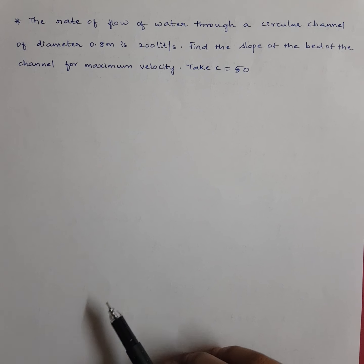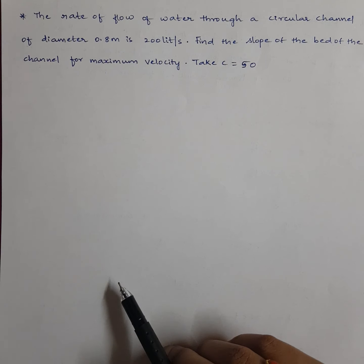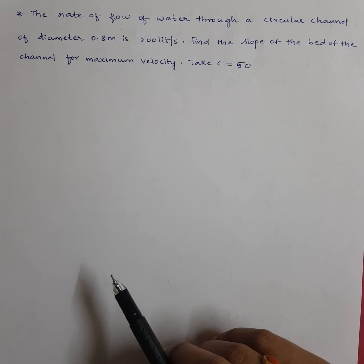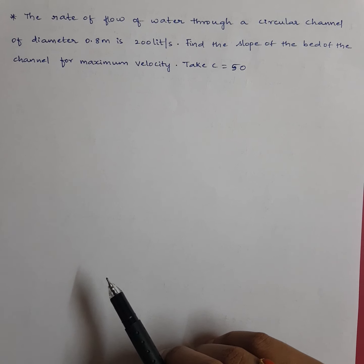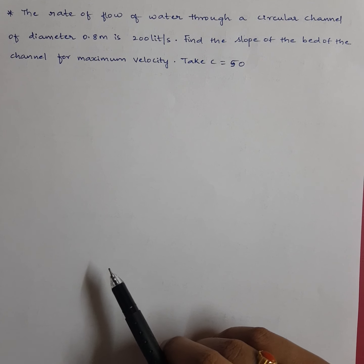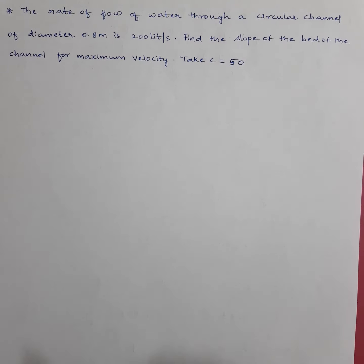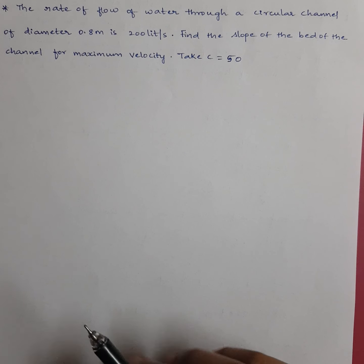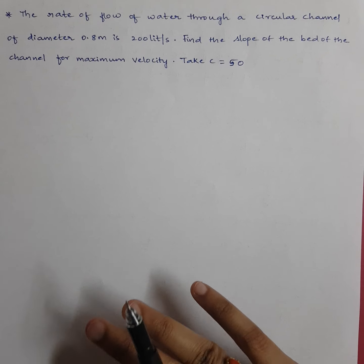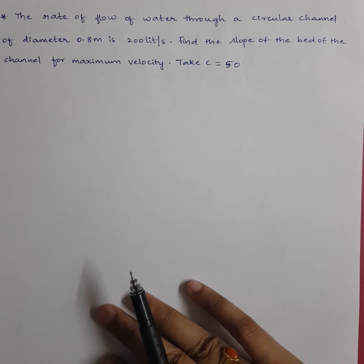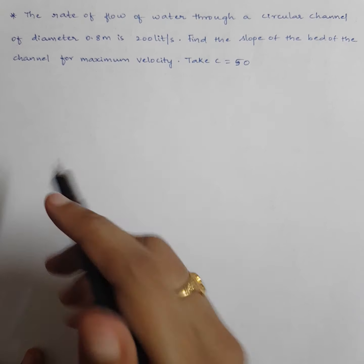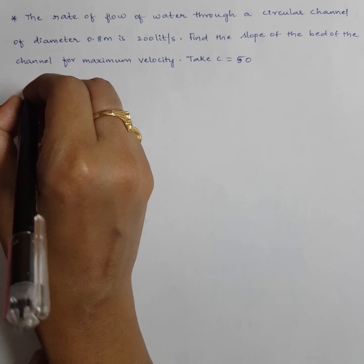Now let's see the next model of problem related to circular channel. A circular channel of diameter 0.8 meters carries 200 liters per second. Find the slope of the bed for maximum velocity, with C equals 50. This is related to the maximum velocity condition in most economical circular channel.